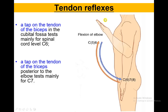The last topic is tendon reflexes. We mainly tap on the tendon of the biceps in the cubital fossa to check the spinal cord level C6, and tap on the tendon of the triceps at the elbow posteriorly for C7.